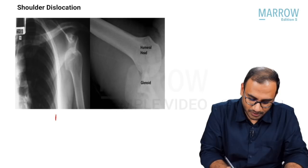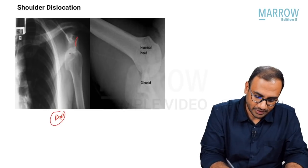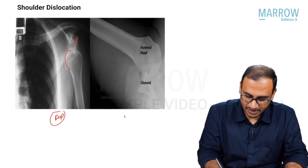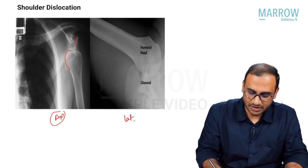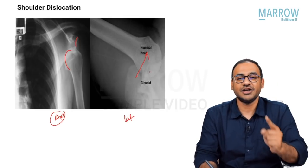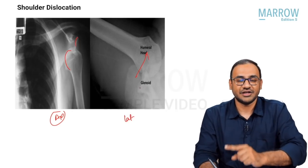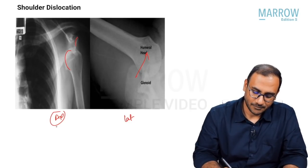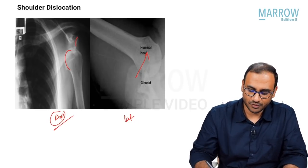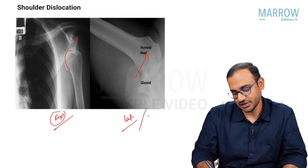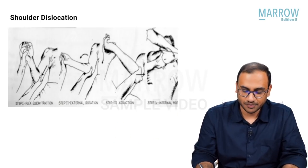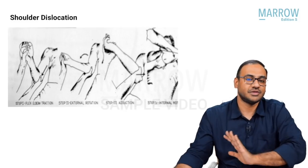On AP view you confirm dislocation — the glenoid and head of humerus are not aligned. On the lateral view, the head of the humerus is seen displaced anteriorly, confirming anterior shoulder dislocation. You can take an AP view and a lateral view, and for the lateral view there is also an axillary view that can help confirm the direction of dislocation.